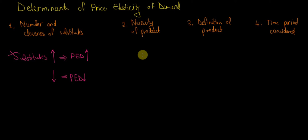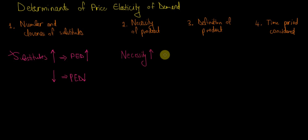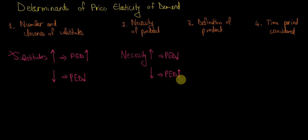The higher the necessity of a product for our well-being, the less elastic the demand is. The opposite also holds true: the less necessary a product, the more elastic the demand and the more sensitive we are to price changes. As a summary: higher necessity leads to lower price elasticity of demand, while lower necessity leads to higher price elasticity.